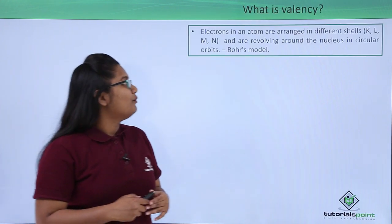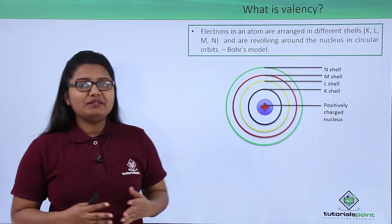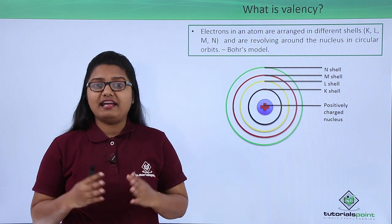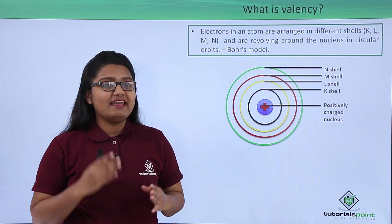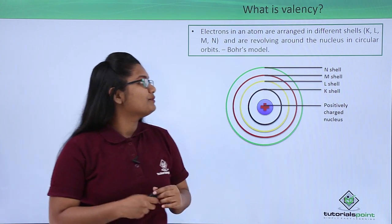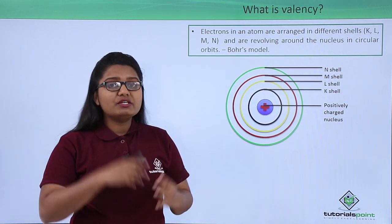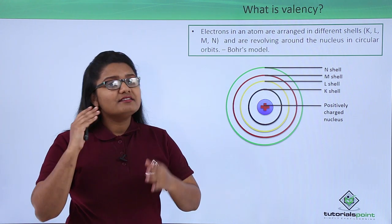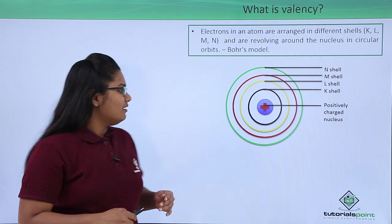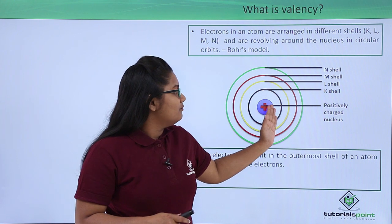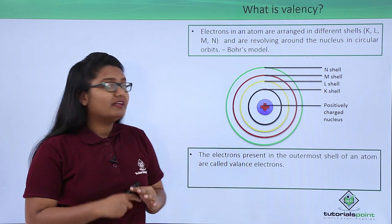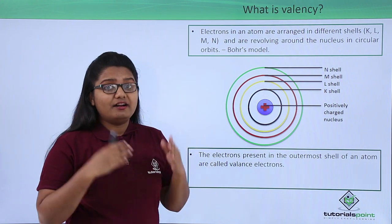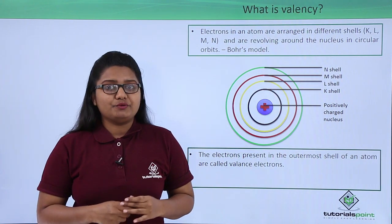From Bohr's atomic model we know that the electrons are arranged in terms of shells inside an atom, which are named as K, L, M and N shells. The electrons are also revolving around the nucleus in certain circular orbits. The outermost shell of an atom is known as the valence shell and the electrons that it has are known as valence electrons.